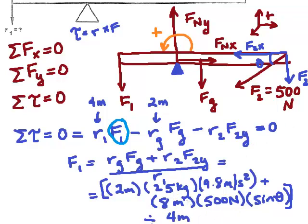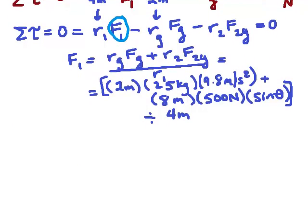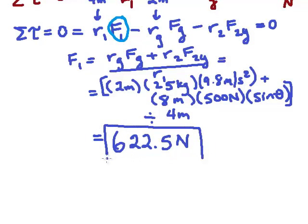If you'll notice from this, we're going to get Newtons as the units, so that's a good thing. When you plug in all these numbers into your calculator, you get 622.5 Newtons. So that's going to be equal to F1.